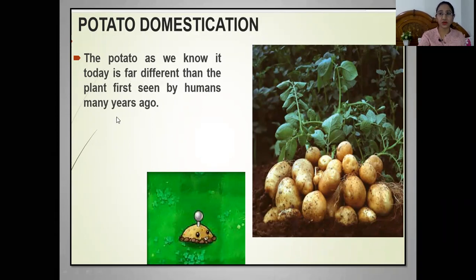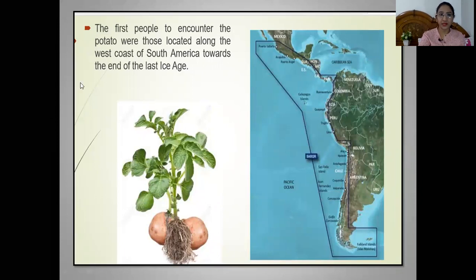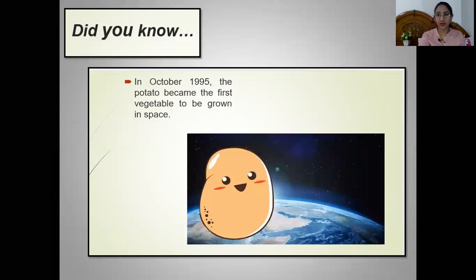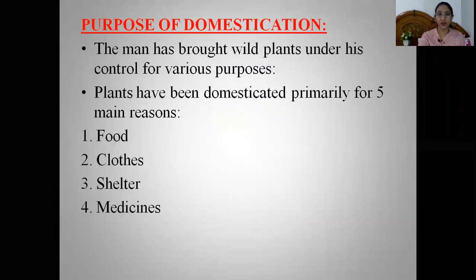The fifth example is potato domestication. The potato we know today is far different from what was first seen by humans many years ago. The first people to encounter the potato were located along the west coast of South America towards the end of the last ice age. In 1995, the potato became the first vegetable to be grown in space, showing how domestication has brought wild species into cultivated forms through human management.